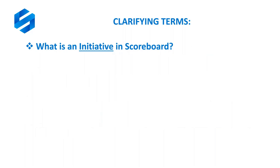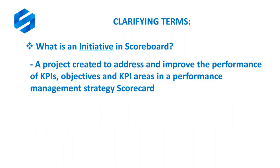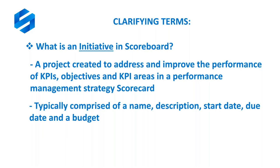Let's start by clarifying some terminology. What is an initiative in Scoreboard? It's basically a project created to address and improve the performance of KPIs, objectives, and KPI areas in your performance management strategy scorecard. An initiative is typically comprised of a name, a description, a start date, a due date, and a budget — though really the only required element is a name.